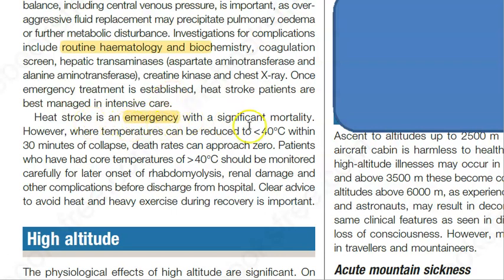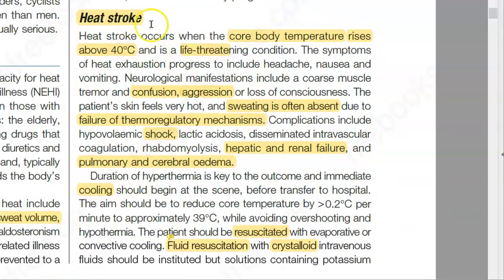This is an emergency — temperature above 40°C with organ failure. After emergency care, move the patient to the ICU. Later complications include rhabdomyolysis and renal damage, so continue monitoring even after treatment. To summarize: heat stroke is hyperthermia with body temperature above 40°C — a life-threatening condition that follows heat exhaustion. Sweating is absent in heat stroke, but present in heat exhaustion.